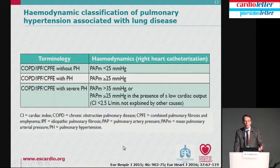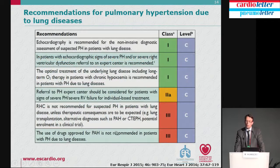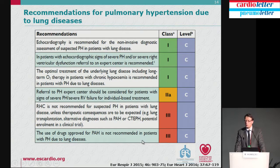For Group 3 PH — patients with lung disease — those with severe PH (mean PAP above 35, or above 25 with a low cardiac index) should similarly not receive PAH-approved therapy. However, these patients may be considered for treatment within a randomized controlled trial or in a registry.